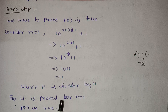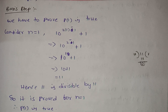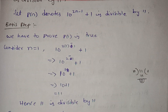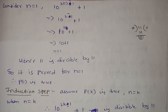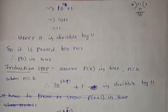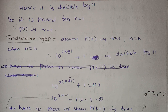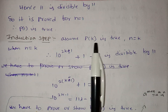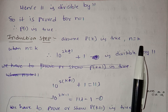So it is proved for n equals 1. Therefore P(1) is true. What do we prove in the basis step? P(1) is true. We prove the second step: the induction step. Assume P(k) is true when n equals k.